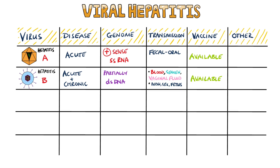Three doses are typically given over a period of 3–5 months. Hepatitis C is the most prevalent blood-borne illness in the US. It can cause an acute hepatitis and becomes chronic in approximately 80% of patients.